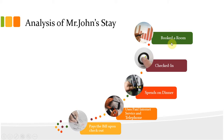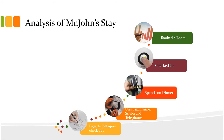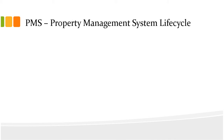At step one, Mr. John booked a room, then checked in, spent money on dinner, used the paid internet service and telephone, and paid the bill upon checkout. This is the lifecycle of Mr. John's stay. All that billing data — the room booking, dinner, internet, and so on — is stored in the PMS, which is called the Property Management System.